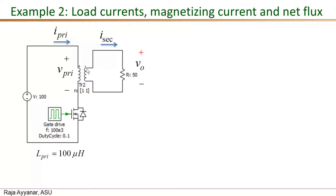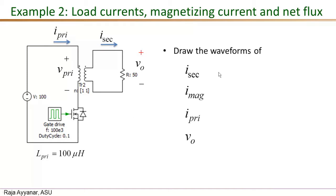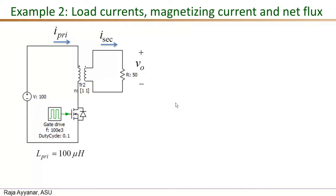The circuit has a transformer with a convenient turns ratio of 1:1. The primary is switched by a MOSFET with a 100 V input source. The secondary is connected to a 50 Ω resistor. The magnetizing inductance referred to the primary side is Lprimary = 100 μH. The switching frequency is 100 kHz and the duty cycle — the ratio of on-interval to total period — is 0.1.